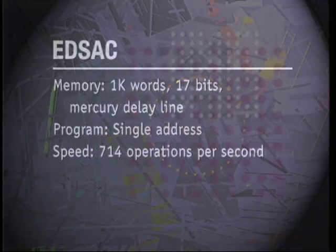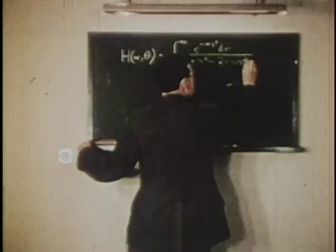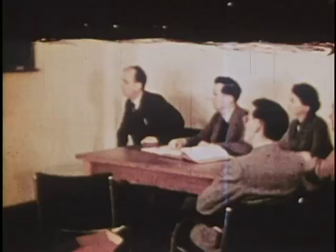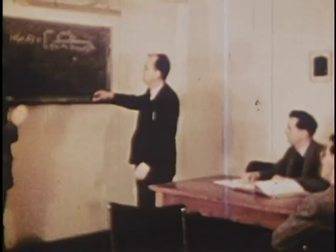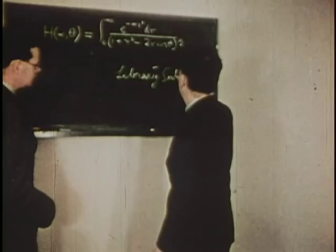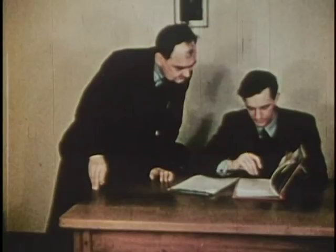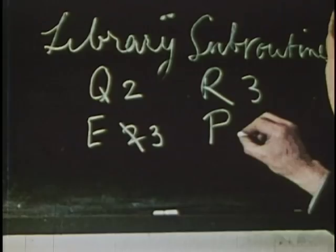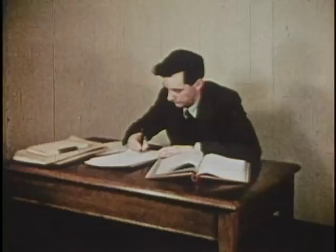Wilkes' EDSAC movie, shown at the 1951 Joint Computer Conference in Philadelphia, provides us with a great view of what computing was like at that time. The mathematician explains his problem to a committee of experts. The first thing to do is to make a list of the library subroutines that will be needed: a subroutine for quadrature, one for the exponential function. A member of the committee interrupts to point out that there is a more suitable exponential routine available. Then a read routine and a print routine. The committee proceeds to discuss the programming of the problem, and the programmer gets to work, referring to the library catalogue as required.